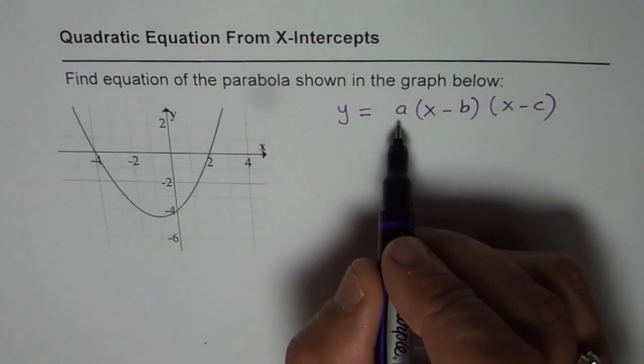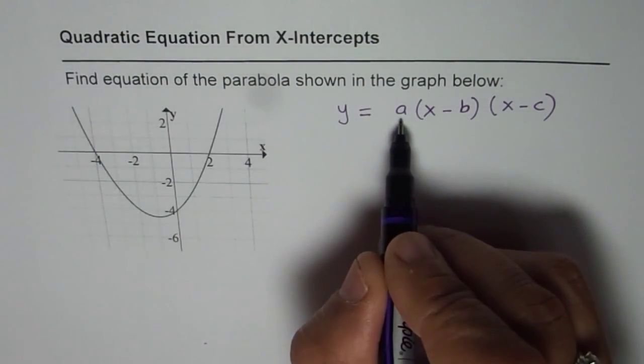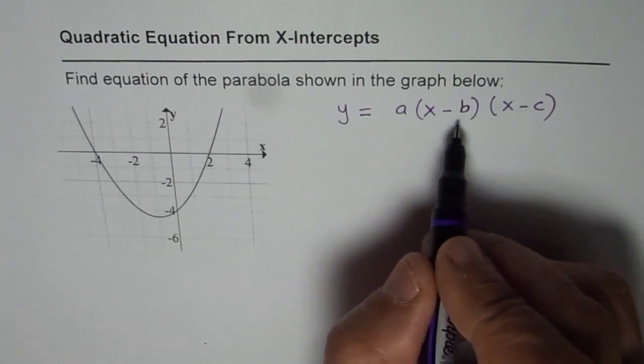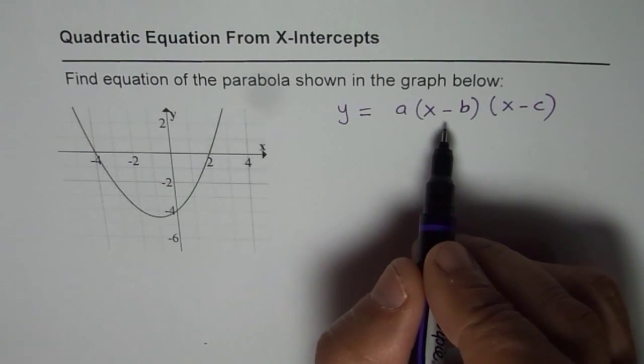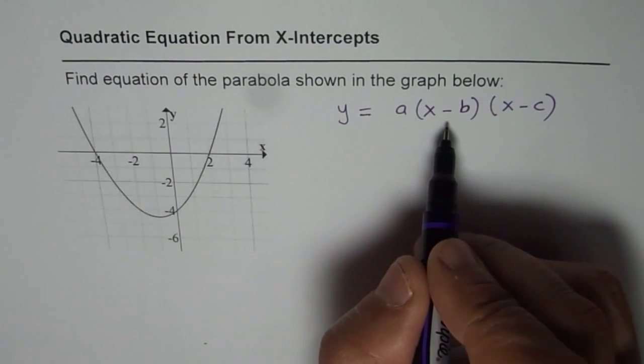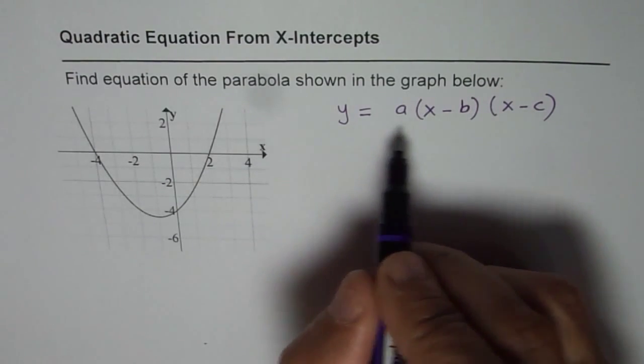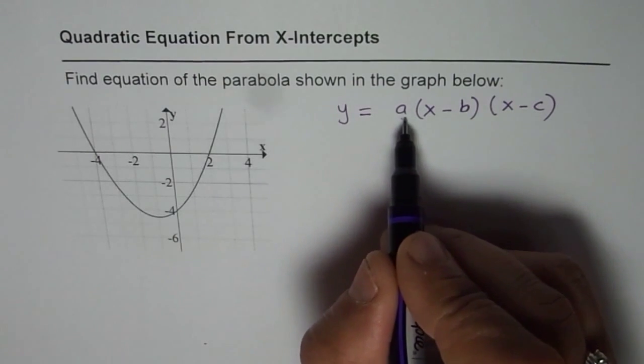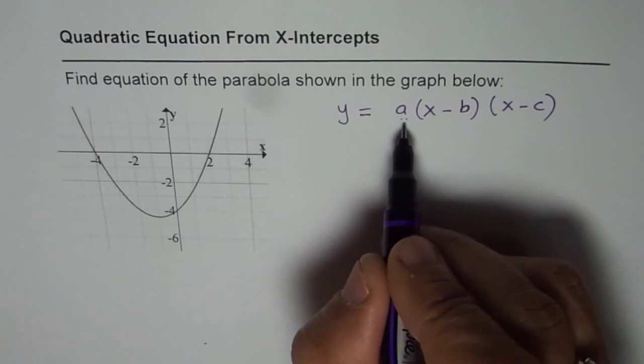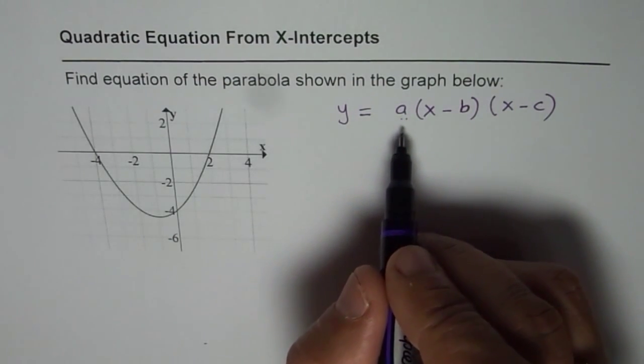Now if we do not find a, then in general we get a family of parabolas represented by a quadratic equation which has the same x-intercepts but could have different other values. But when we find a, then we are talking about a specific graph.